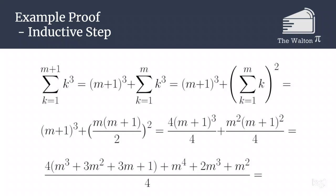So combining those together we get 4 times m cubed plus 3m squared plus 3m plus 1, which is what we get when we expand out m plus 1 cubed, along with m to the fourth plus 2m cubed plus m squared, all of that is over 4.